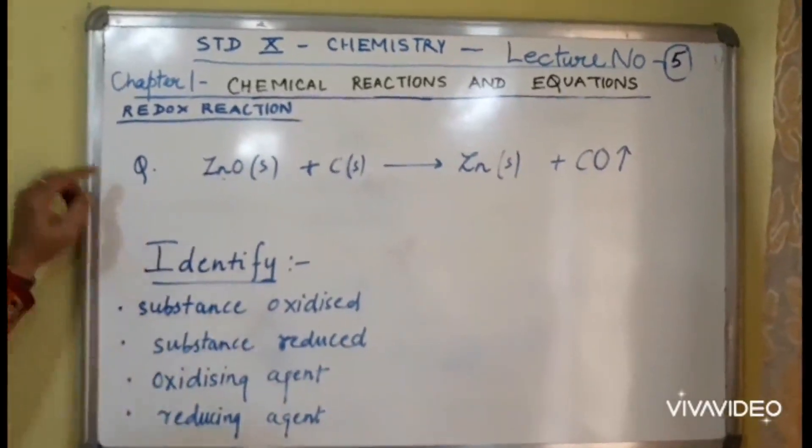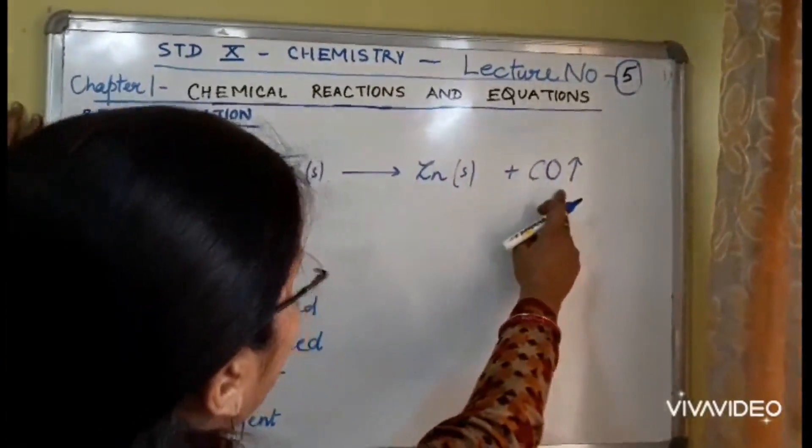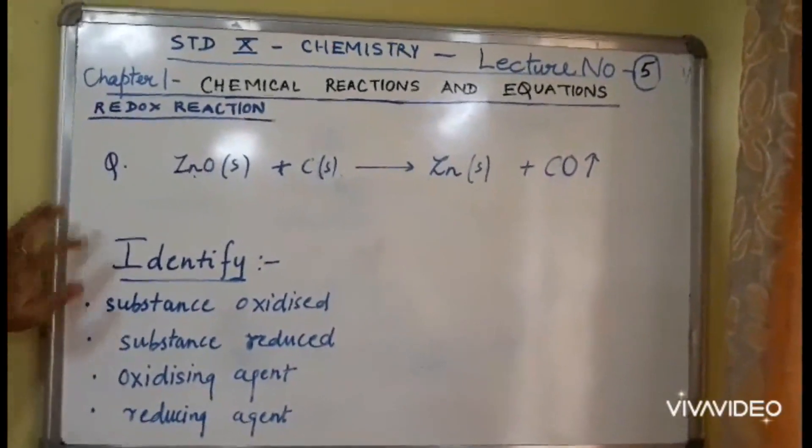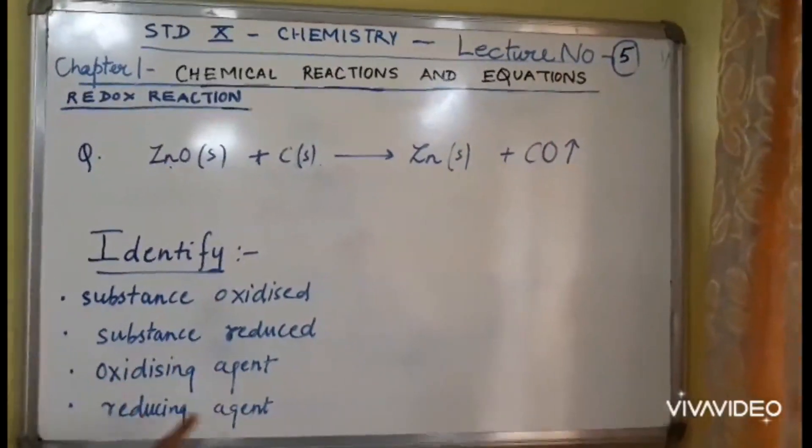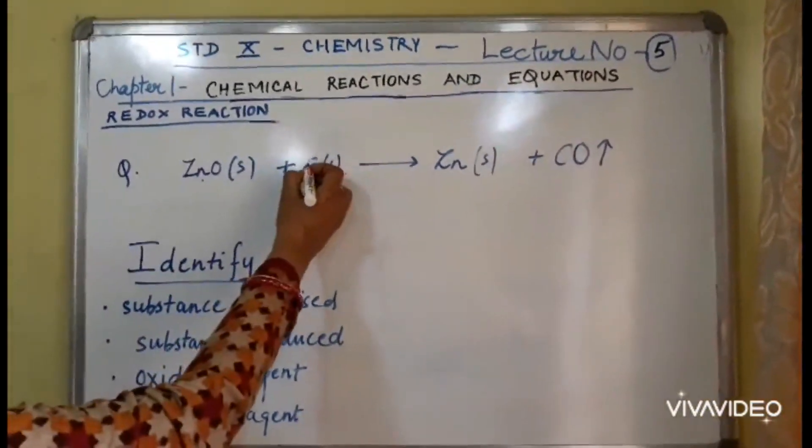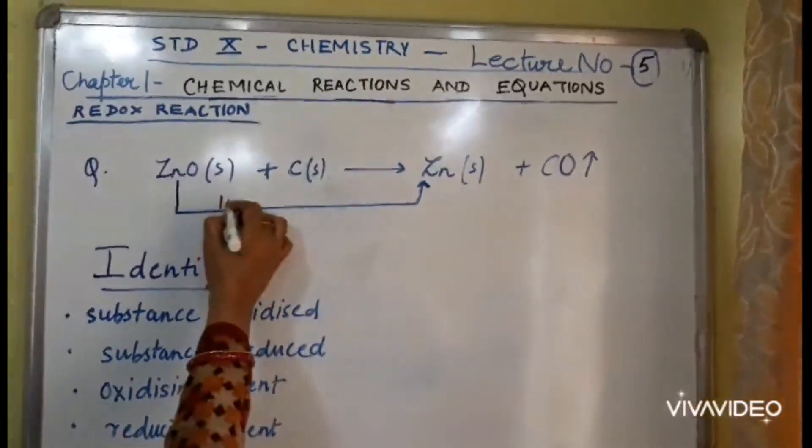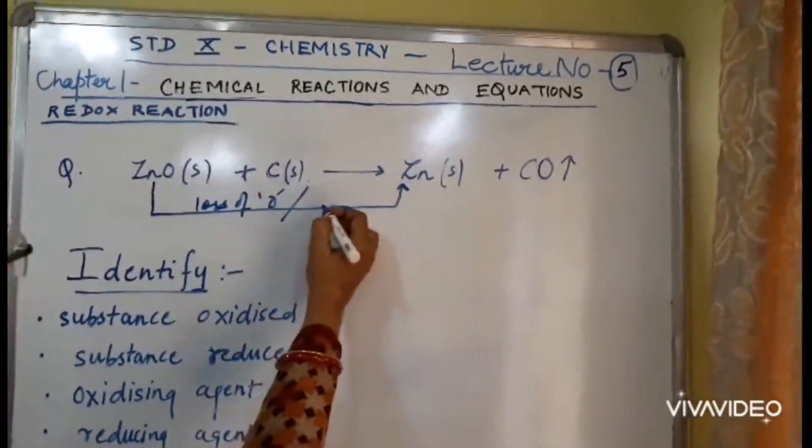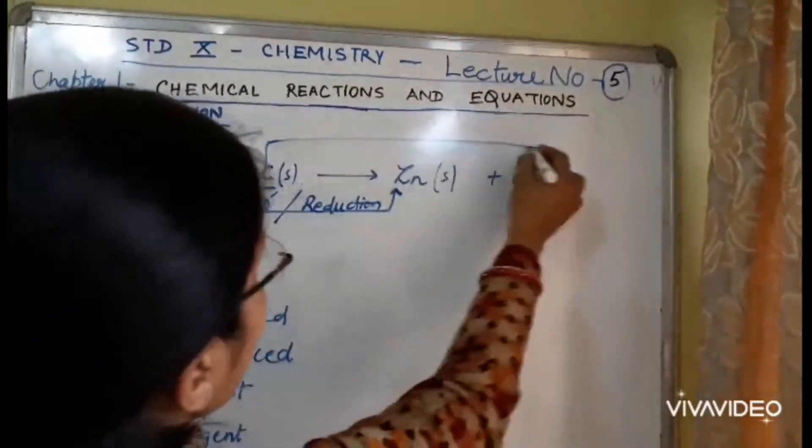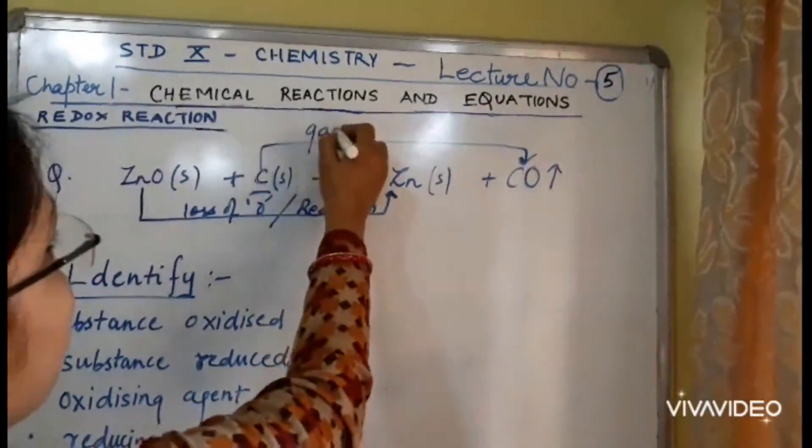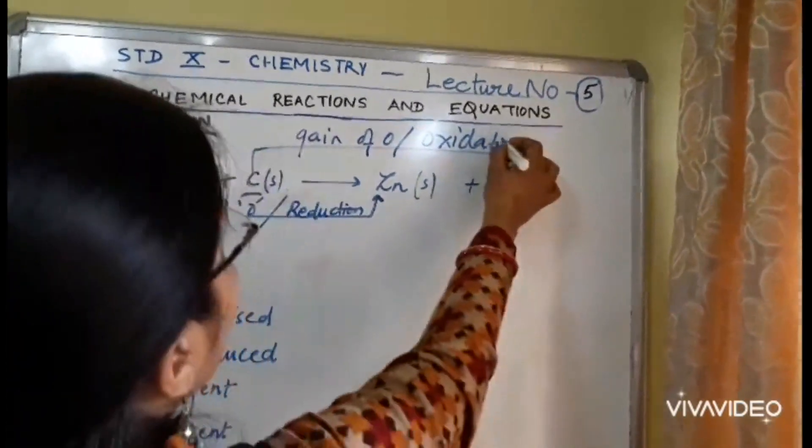Now look at this question. Zinc oxide reacts with carbon to form zinc and carbon monoxide gas. The question is, identify the substance which is oxidized, the substance which is reduced, the oxidizing agent and the reducing agent. Now I solve this for you. ZnO changes to zinc, loss of oxygen occurs, loss of O, loss of O recall is reduction. So, carbon gains oxygen, gain of oxygen, gain of O, gain of O is oxidation.